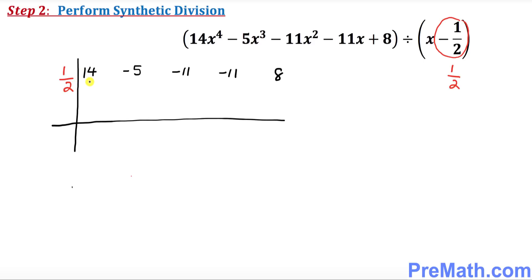Put down 14 as it is — it comes down here. Now multiply 1 over 2 times 14, which gives you 7. Add 7 and negative 5 — that gives you 2. Now multiply 1 over 2 times 2, which gives you 1.